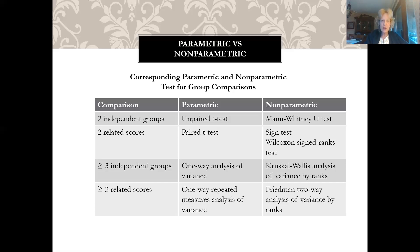If you have three or more groups with related scores, you use a one-way repeated measures analysis of variance as the parametric approach, and the Friedman two-way analysis of variance by ranks for the non-parametric approach.